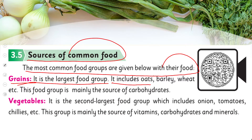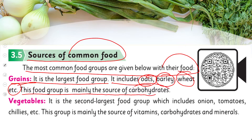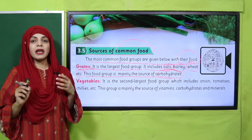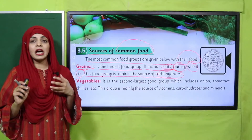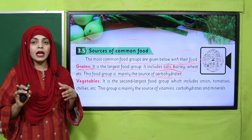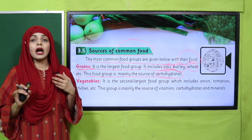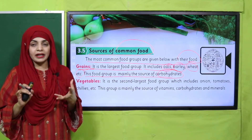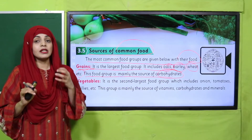This food group is mainly the source of carbohydrates. My dear students, grains are the biggest food group — things like rice, lentils, and flour fall under this category. They mainly provide carbohydrates and are the largest food group.